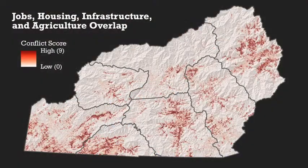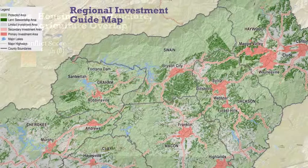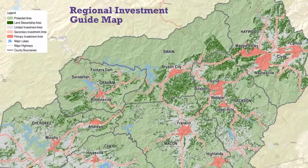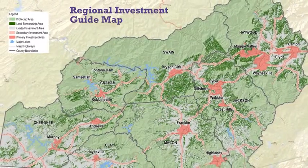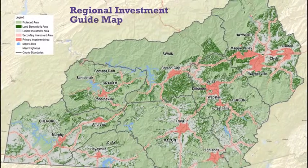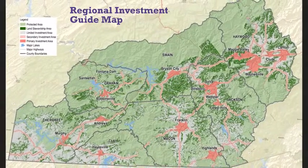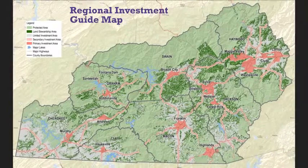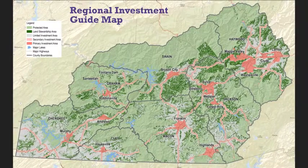The suitability and conflict maps, taken together and combined with the results of the feedback received at the community meetings, leads us to a final Regional Investment Guide map. This map helps us to see and understand the regional vision. It takes into account the growth we expect to see, the community's direction and how to best use our resources, and the trade-offs we should anticipate and discuss — all to help envision a better future for our region.